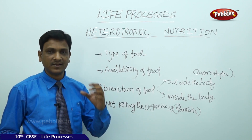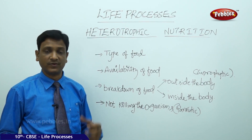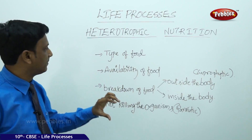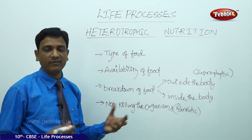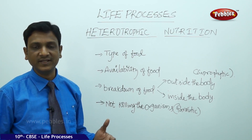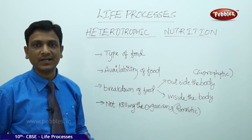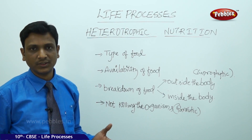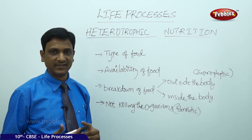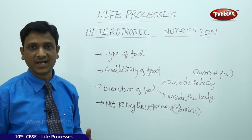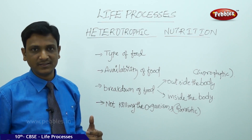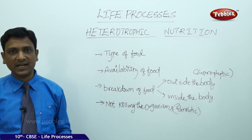Now let us look at heterotrophic nutrition — the mode of nutrition in which organisms depend on other organisms for their food and energy requirements. In heterotrophic nutrition, the mode of nutrition depends upon the type and availability of food. For example, some foods are stationary — grass stays still on the land, so a cow or goat simply goes and eats it. But in other cases the food is mobile, and the animal must hunt it, as a lion or tiger hunts its prey.